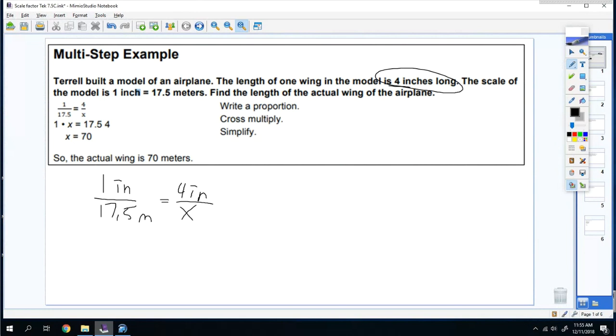So now all you do is cross multiply. So you do 4 times 17.5 which is 70. So the wing's actual is 70 meters long.